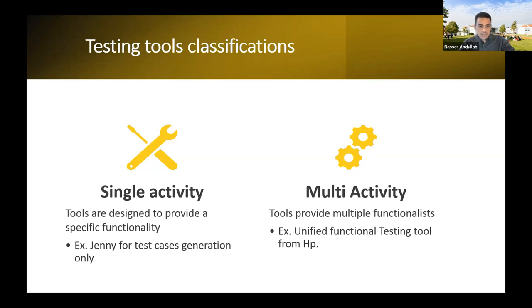Multi-activity tools, on the other side, means that the tool is designed for multiple activities. For example, Unified Function Testing (UFT) is a very popular tool. It's used for many things: recording, generating output, and even automation with the test cases. So this is multiple function, we can say.